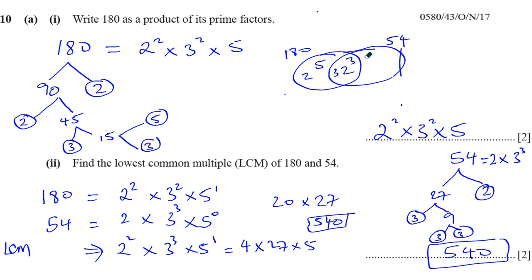Now if you want to find the LCM, it's basically every number that appears, without counting anything twice. So you're going to have two times two which is two squared, times three times three times three which is three cubed, times five, which is exactly the same thing that we've got here.